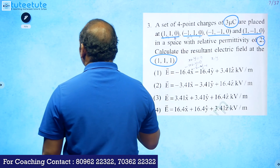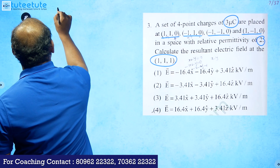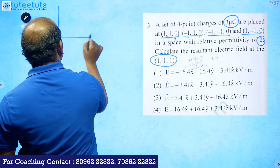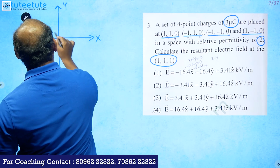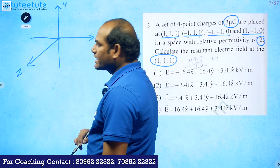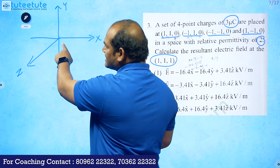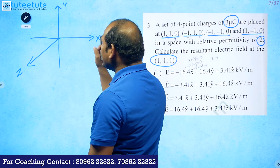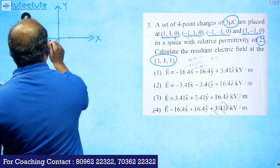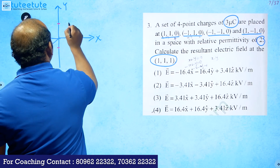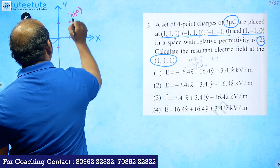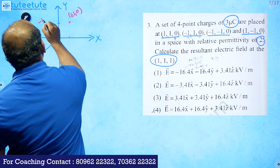To represent all these points, we take the x-axis, y-axis, and z-axis coming out of the board. The point (1,1,0) is where x is positive and y is positive. The point (-1,1,0) has x negative and y positive. The point (-1,-1,0) has both x and y negative, and (1,-1,0) has x positive and y negative, with z equal to zero.